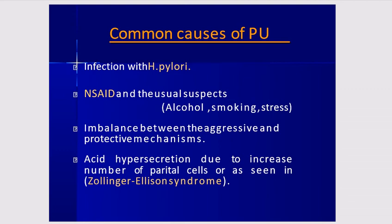Common causes of peptic ulcer include: infectious H. pylori; use of NSAIDs and other agents such as alcohol, smoking, and stress; imbalance between aggressive and protective mucosal mechanisms; and acid hypersecretion due to an increased number of parietal cells, as seen in Zollinger-Ellison syndrome.